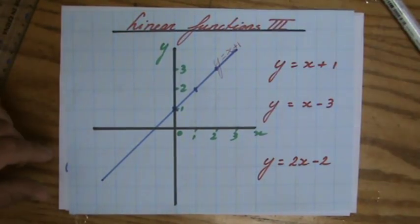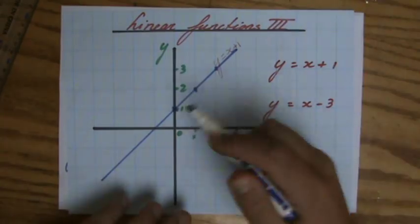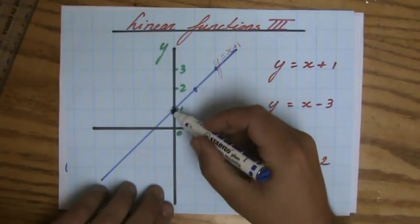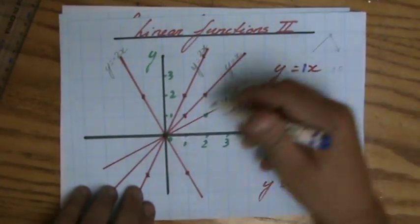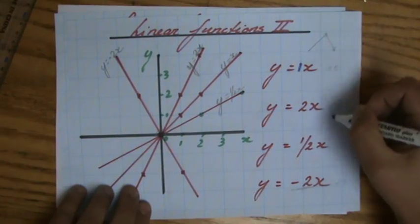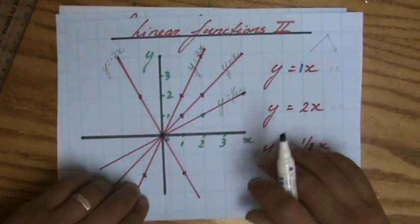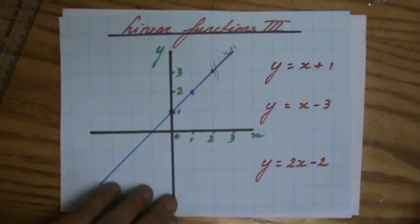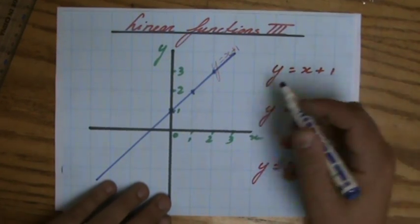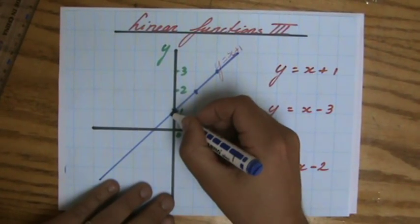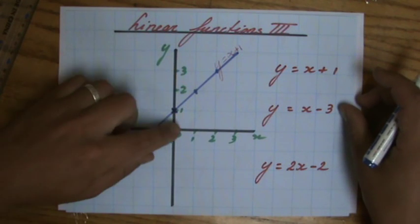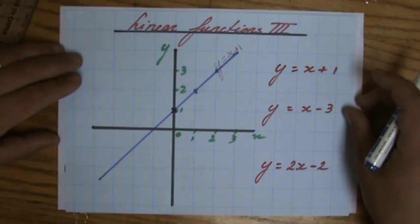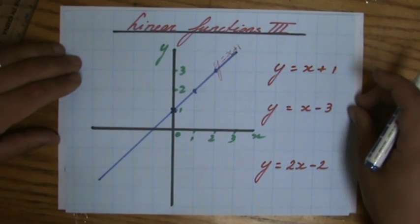Good, beautiful line. What do I notice now? It doesn't go through the origin anymore, like the lines where it's plus zero that went through the origin. But now it says plus one, and it goes through the point where y is one when x is zero. Interesting.